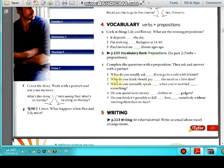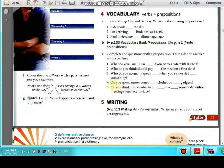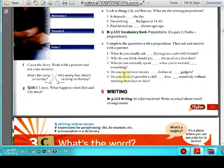Complete the questions with a preposition, then ask and answer with a partner. What do you usually ask for if you go to a cafe with friends? Number one, for. Number two, who do you think should pay for? Again, number two, for. Who do you think should pay for the meal on a first date?